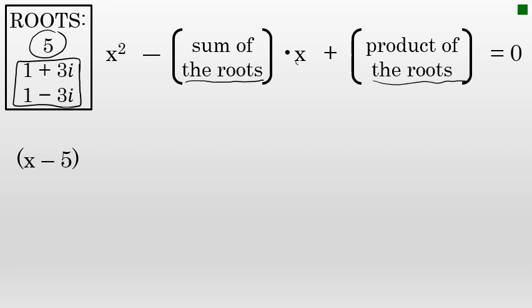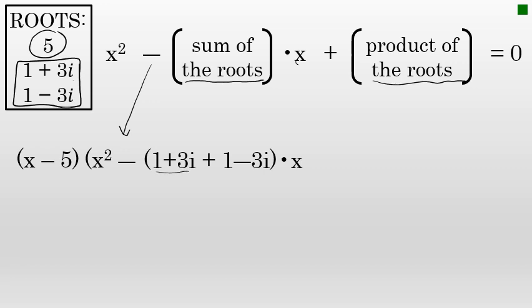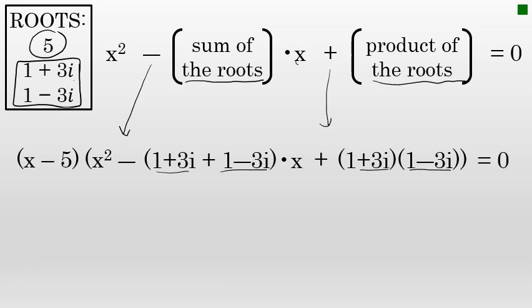Using 1 plus 3i and 1 minus 3i as the two roots of a quadratic, this quadratic would be x² minus the sum of 1 plus 3i and 1 minus 3i, times x, plus the product of 1 plus 3i times 1 minus 3i. Setting that equal to zero, I have the linear factor x minus 5 times this quadratic, which will give me the cubic equation with the three roots I started with.